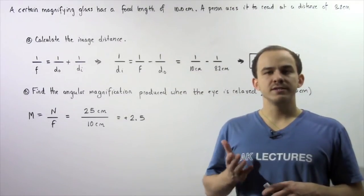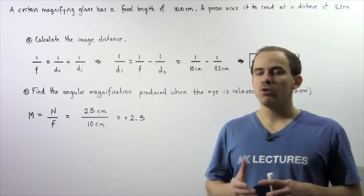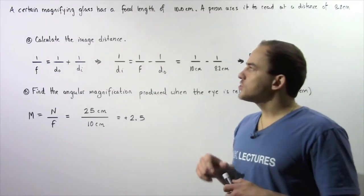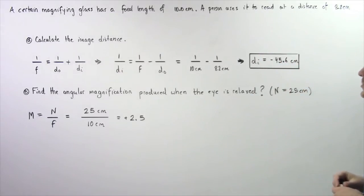In the previous lecture, we discussed magnifying glasses and simple magnifiers. Now, let's look at the following quick example. A certain magnifying glass has a focal length of 10 centimeters. A person uses it to read a book at a distance of 8.2 centimeters away.